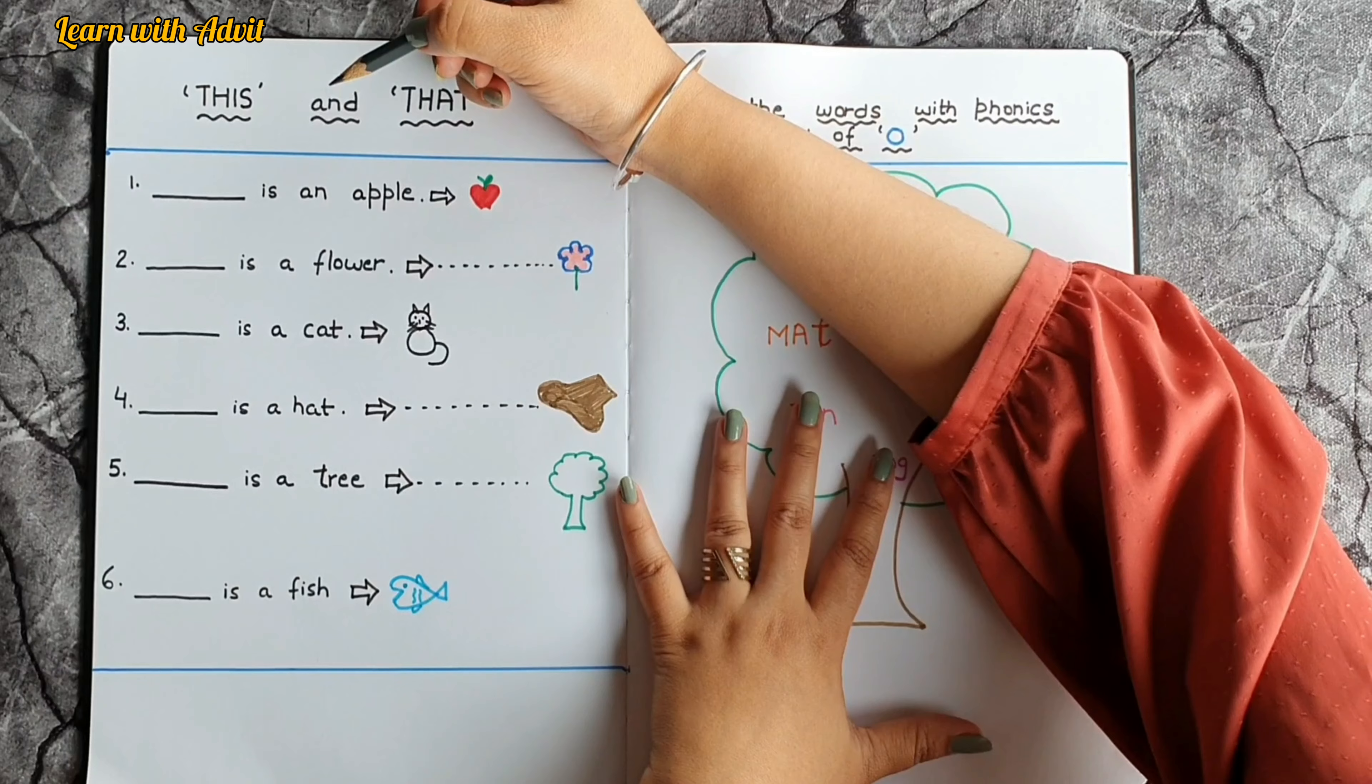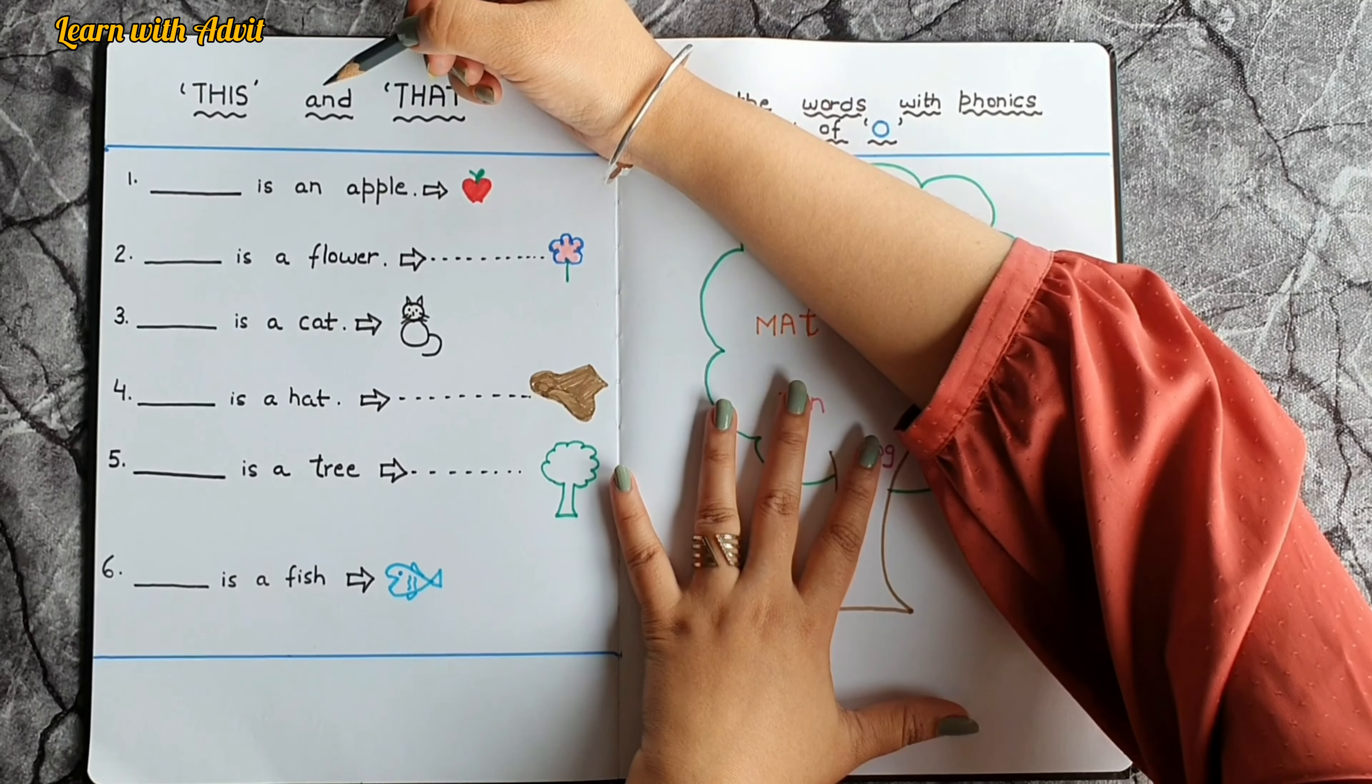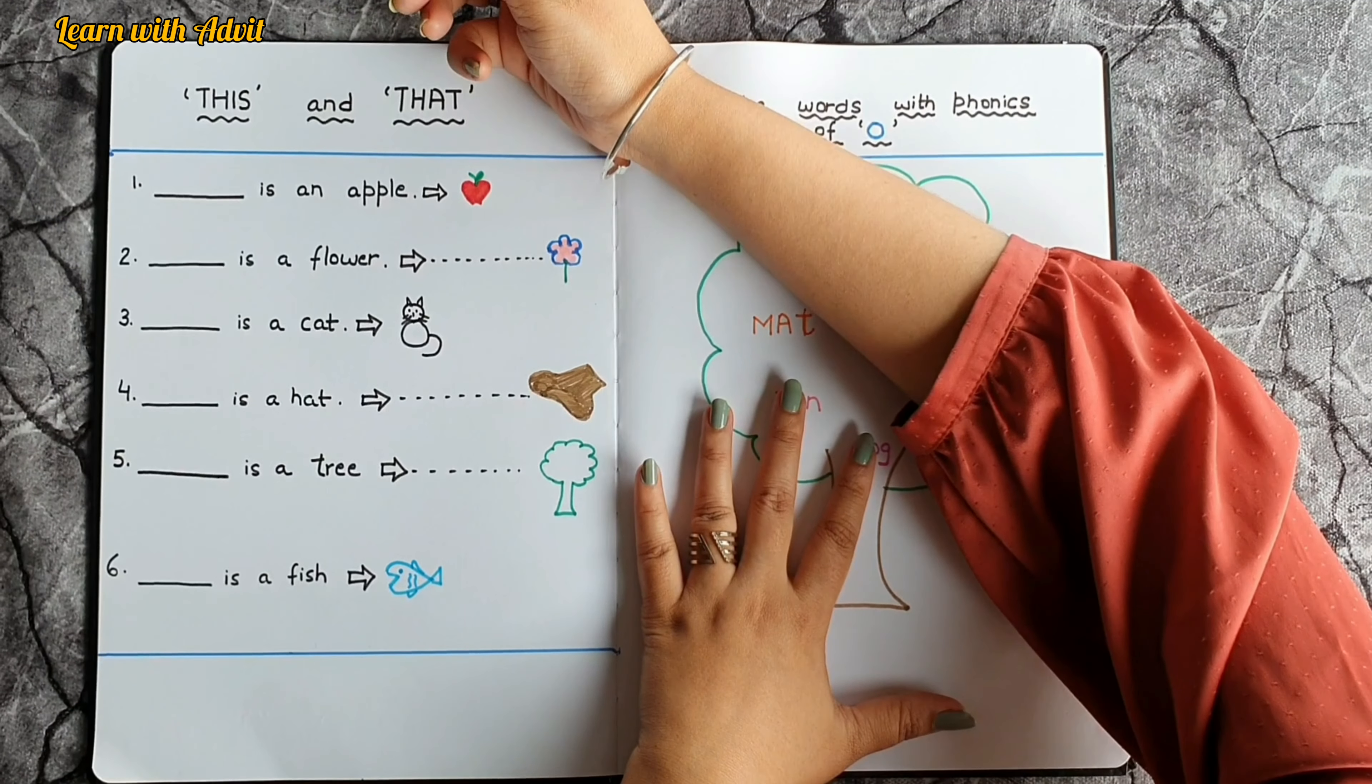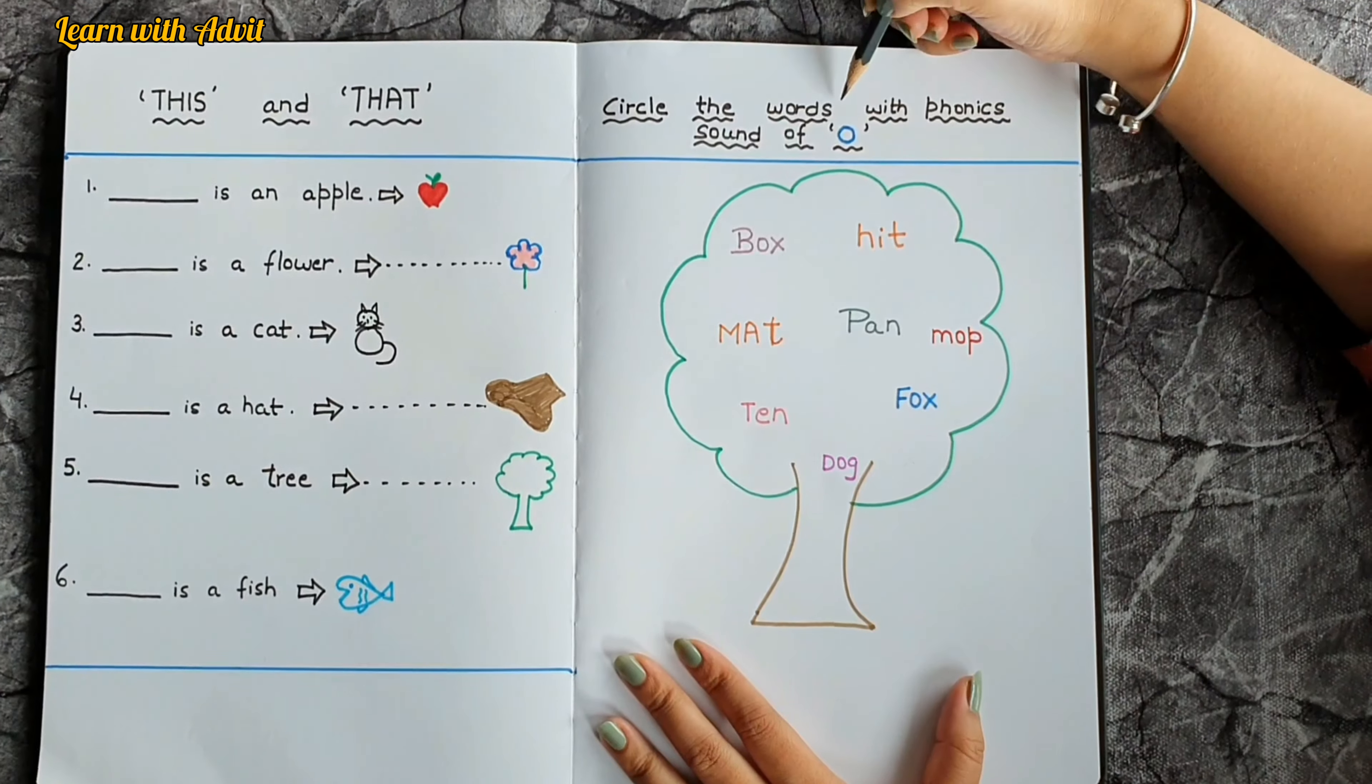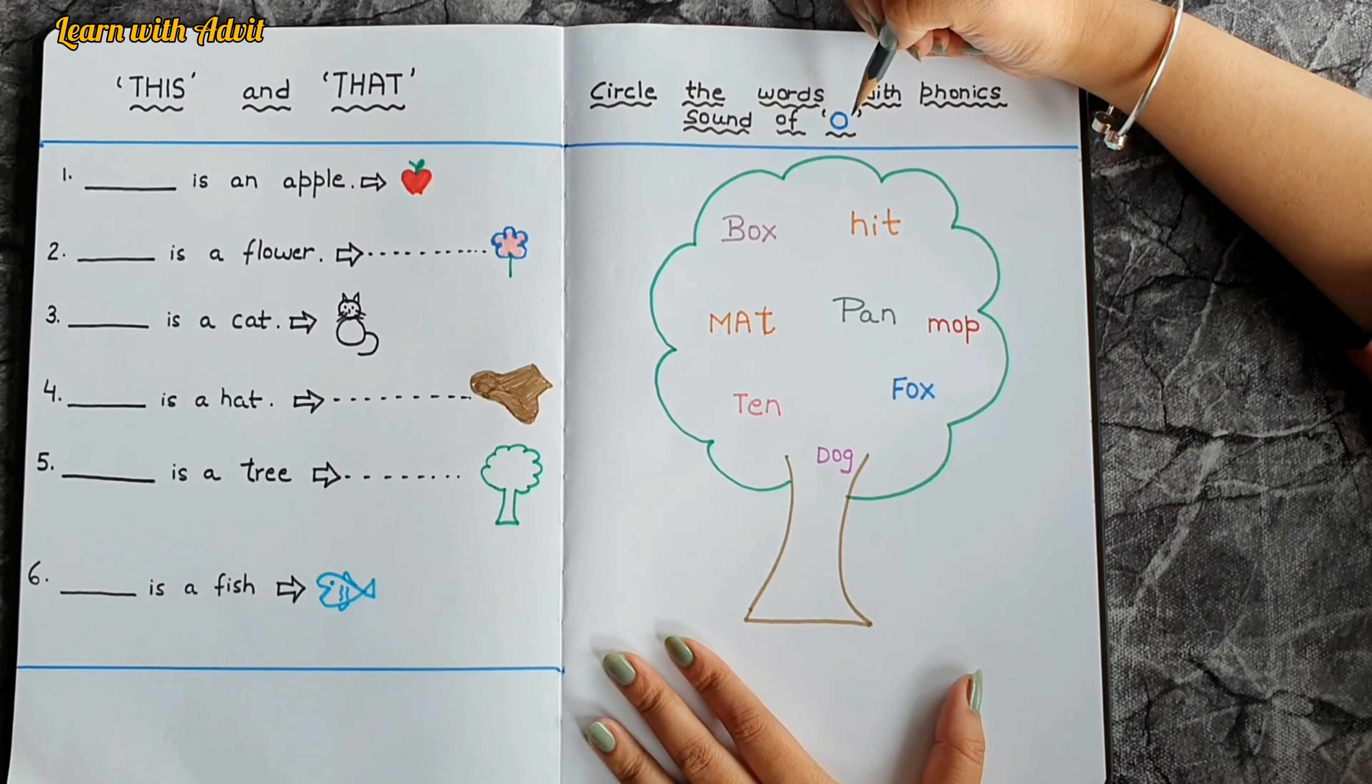The same concept we are using for those and these. But what is the difference? We are using these and those for the plural and more things. Circle the words with phonics sound of 'o'. 'O' makes sound 'oh', yeah.